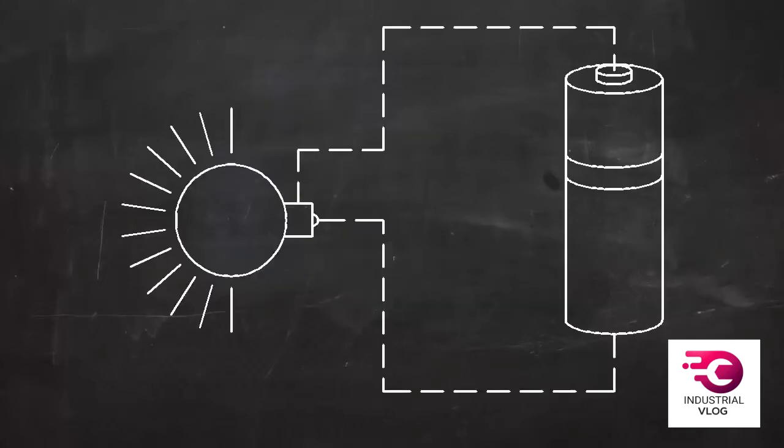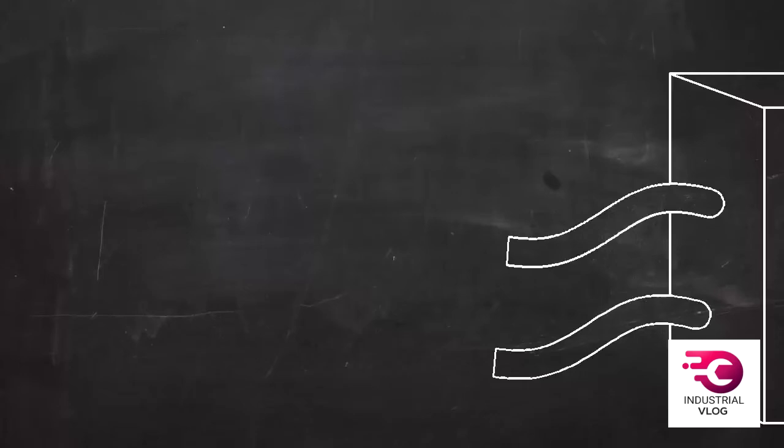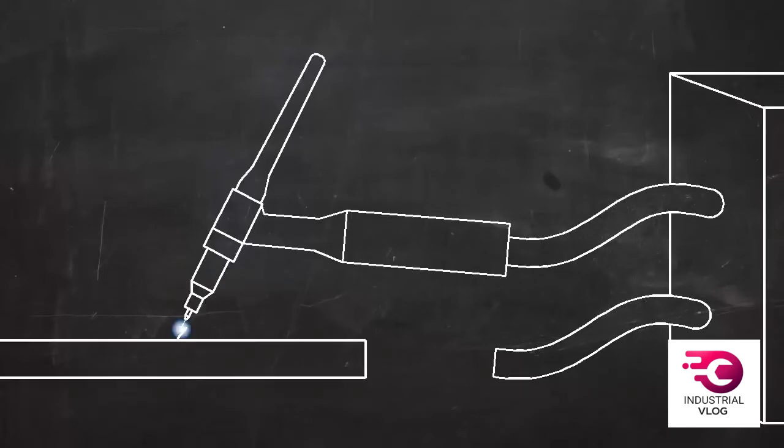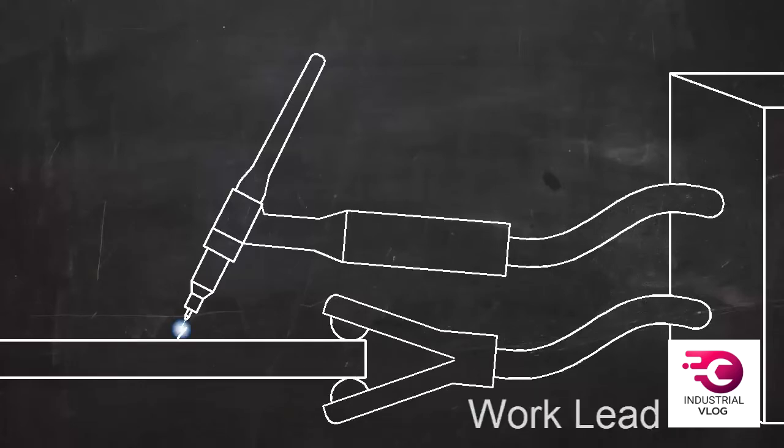In an electric circuit, the current flows in a loop. In TIG welding, the current has to flow in a complete circle from the machine to the torch into the work and back to the machine. A work lead is clamped to the work to complete the circuit from the workpiece back to the machine.